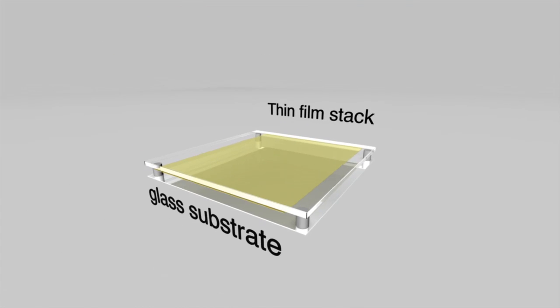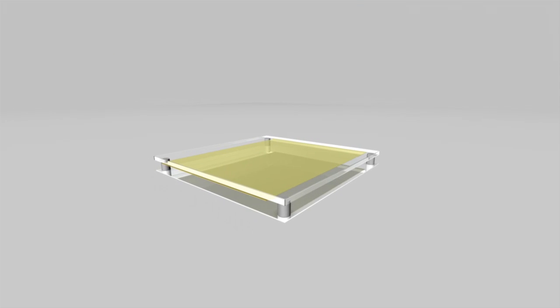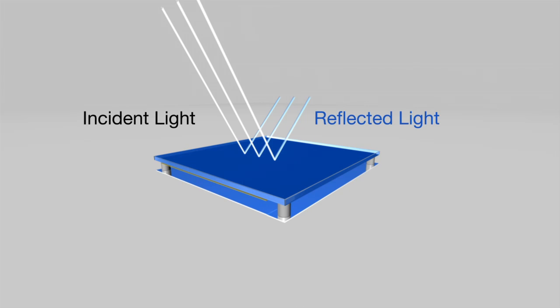The interferometric modulator iMOD element is composed of two conducting plates. One is a thin film stack on a glass substrate. The other is a reflective membrane suspended over the substrate with an air gap in between. When no voltage is applied, the plates are separated and light interacts with the open elements to reflect a specific color.